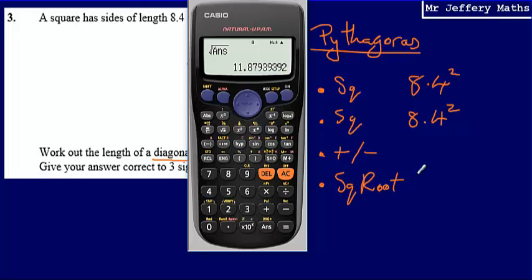We're asked to give your answer correct to three significant figures. Three significant figures are the first three numbers that mean anything. So in this case, we're talking about the 1 in the tens column, the 1 in the units column, and the 8 in the tenths column. So we are rounding to the nearest tenth, or we're rounding to one decimal place.